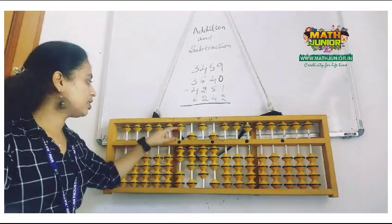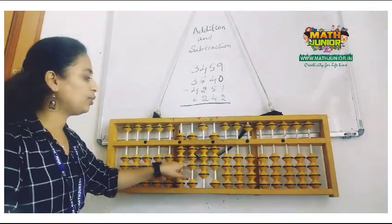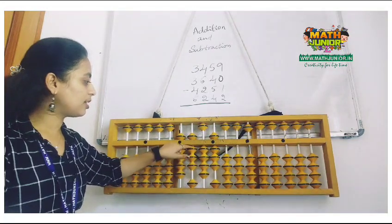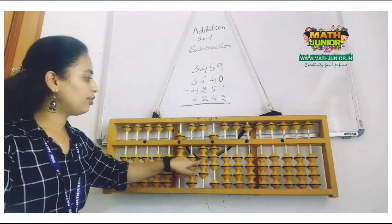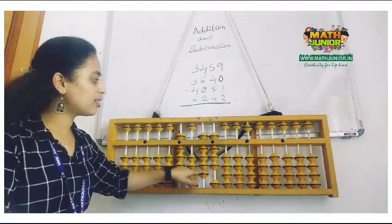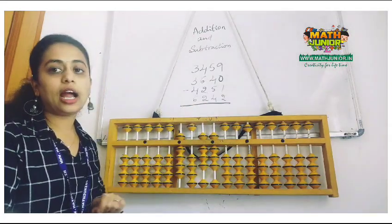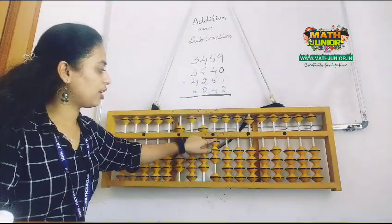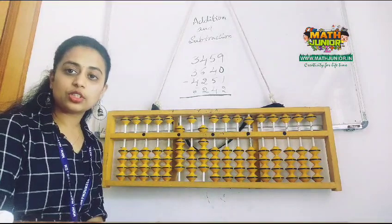Next, 6242. 6000 directly, then I want to add 200 here, so plus 1000 minus 800. I want to add 40, plus 50 minus 10, then I want to add 2, plus 10 minus 8. So the answer is 9090.